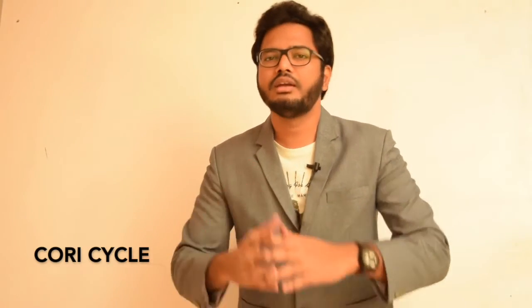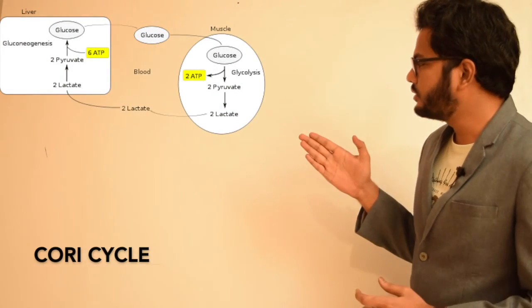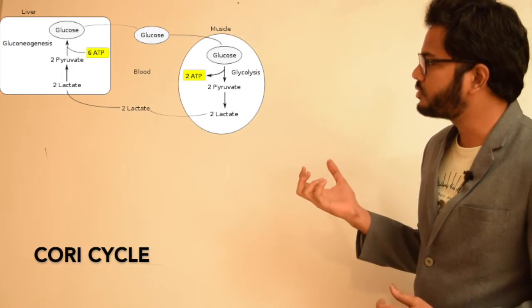As a result, lactate is transferred to the liver via the bloodstream, where gluconeogenesis occurs. The glucose formed in the liver is again used for glycolysis by skeletal muscle, completing the regeneration cycle. Importantly, lactate from skeletal muscle is the major source for gluconeogenesis, and the Cori cycle is also a source of quick ATP generation during anaerobic glycolysis in skeletal muscle and erythrocytes.